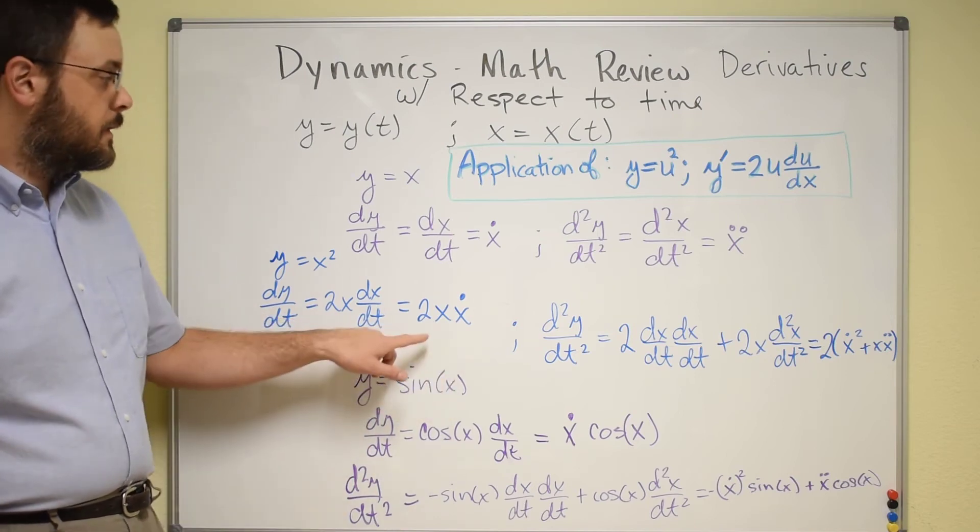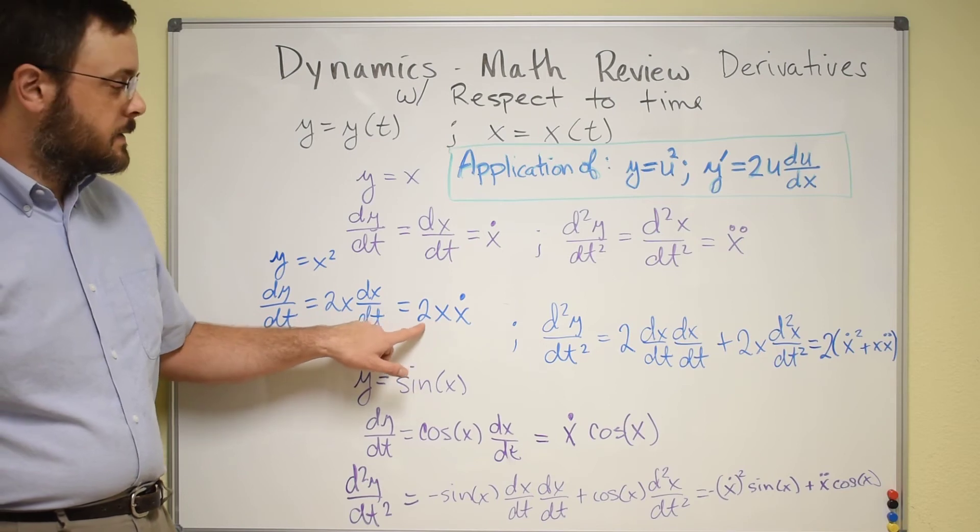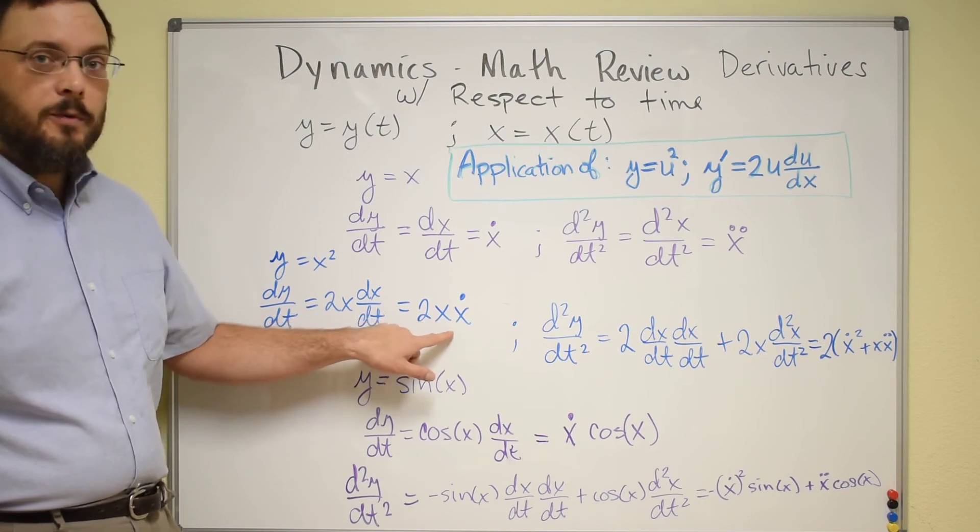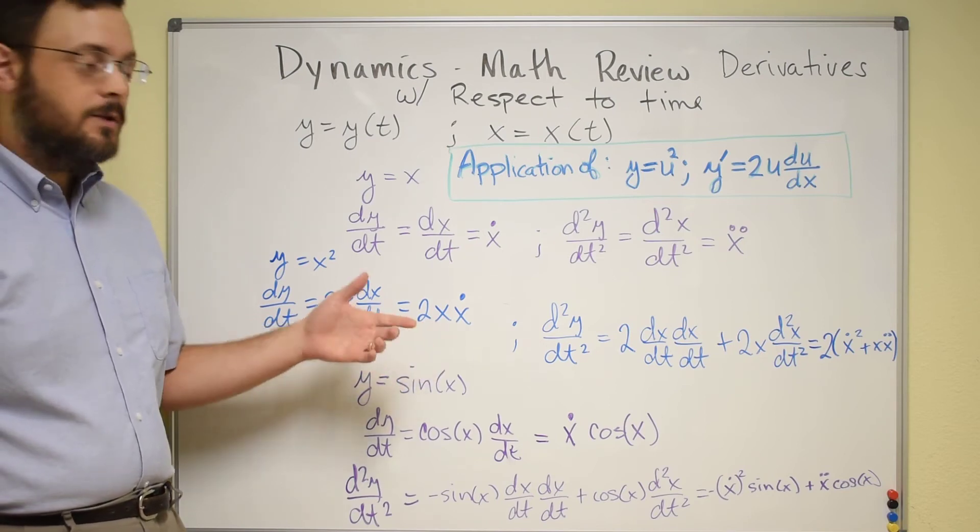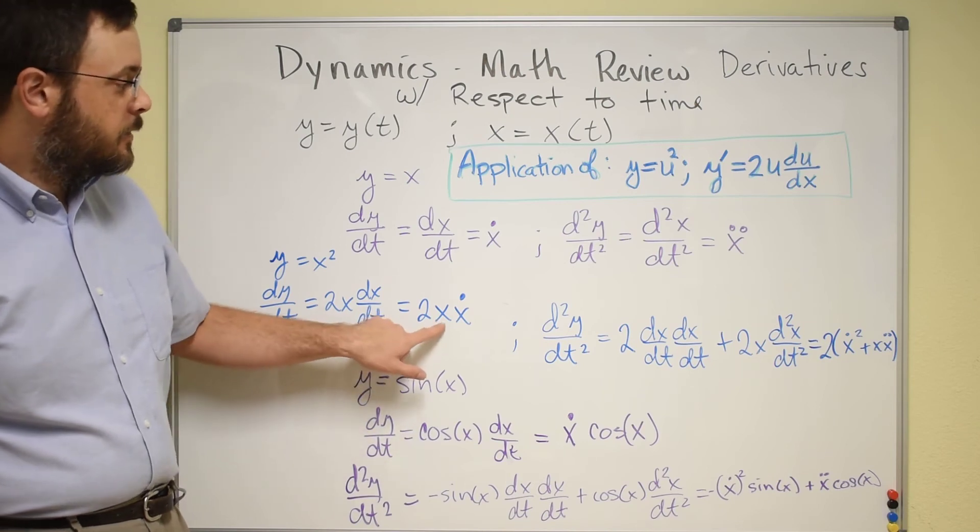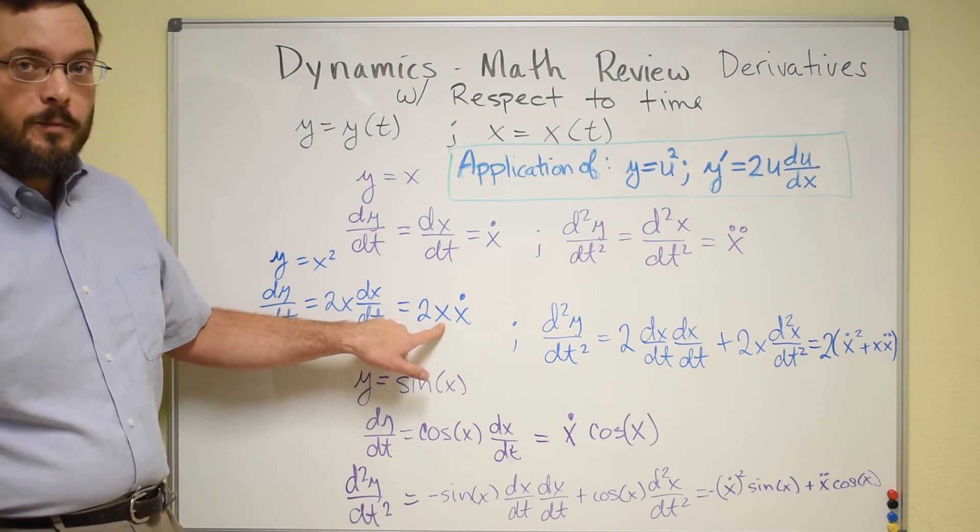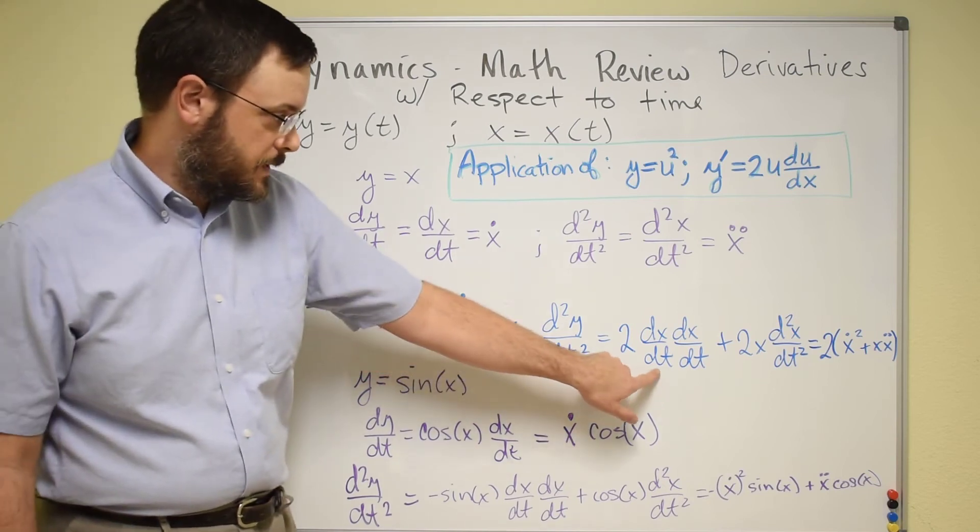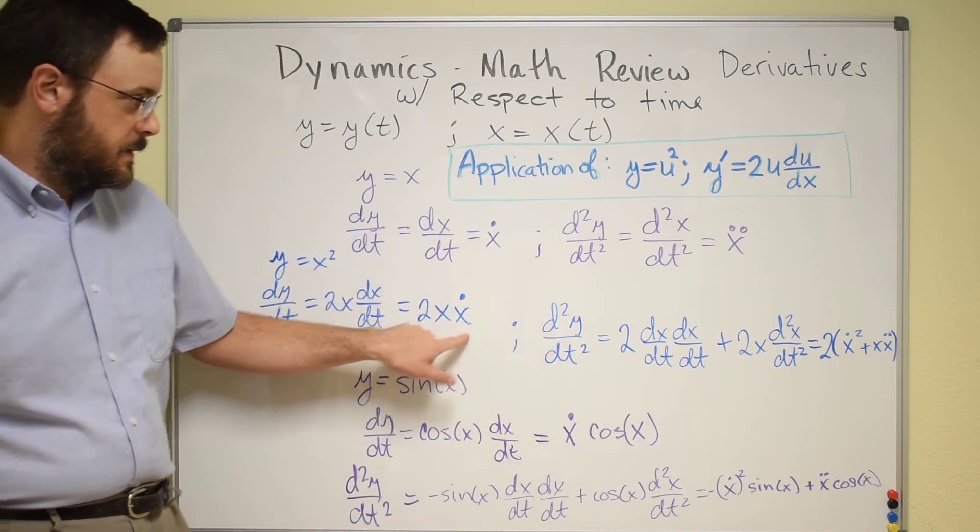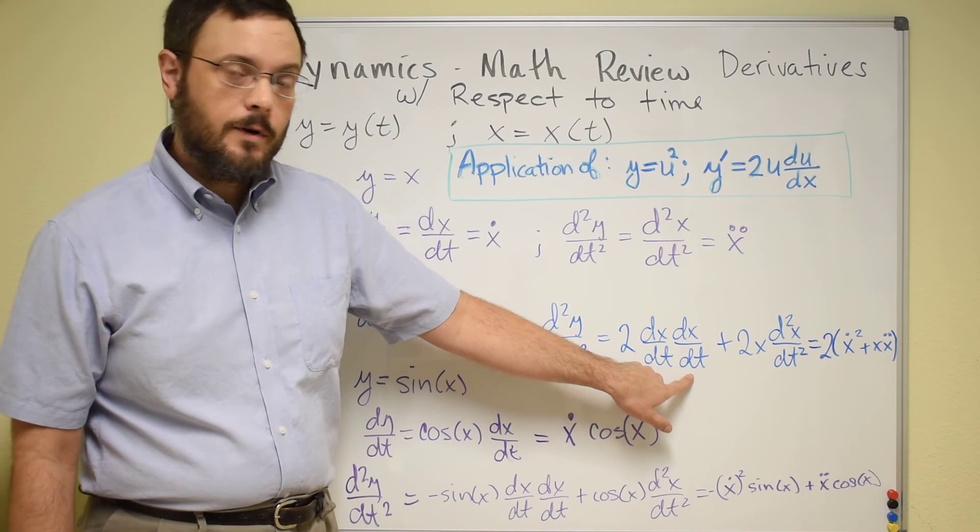Then if we're going to take a second derivative, now we have a constant times two variable terms that are multiplied together. So we have to use the product rule. We have the derivative of the first term, which is just going to be a dx/dt that we see here, times the existing dx/dt that we already had.